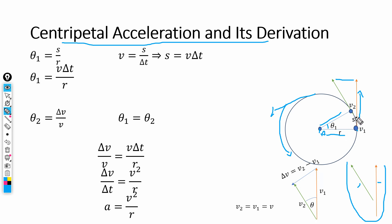From the definition of angular displacement, the angle subtended at the center of the circle equals the arc length divided by the radius. So theta₁ = s / r, where s is the arc length and r is the radius of the circle. This is the definition of theta for the first triangle.